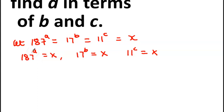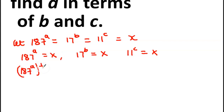So we want to first raise both sides to the power 1 over A. So 187 raised to the power A, then raised to the power 1 over A, is equal to X raised to the power 1 over A.